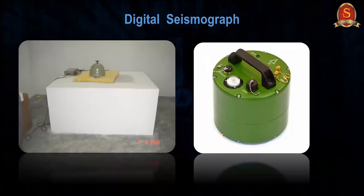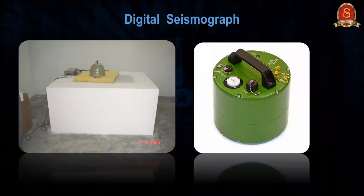Now with digital seismographs, we can identify even less than one magnitude earthquakes. We have two types: broadband seismographs and short-period seismographs. These can measure earthquakes up to about 1200 km radius, though sensitivity is around 300 to 400 km. To locate one earthquake precisely, you need at least three seismographs at that location.